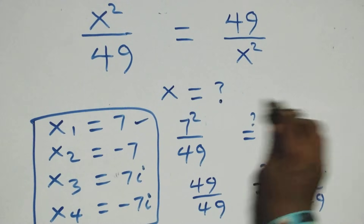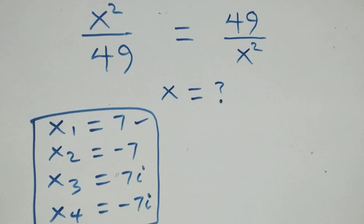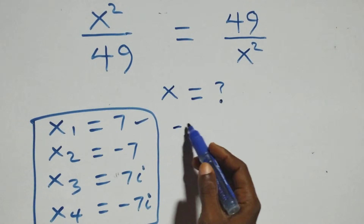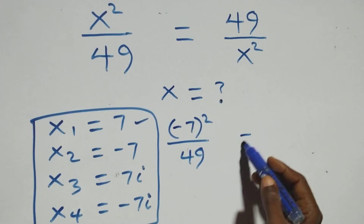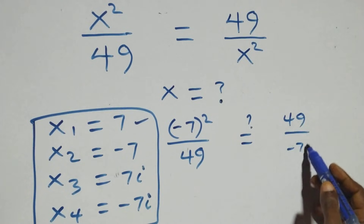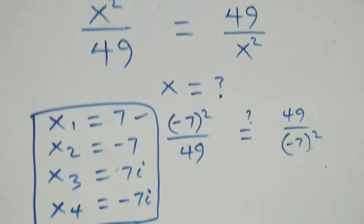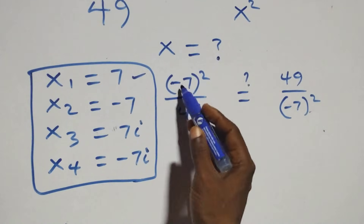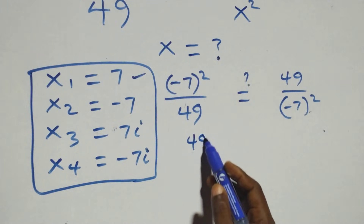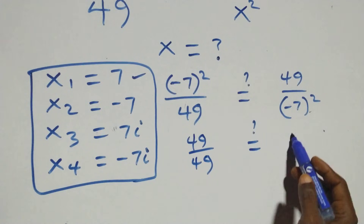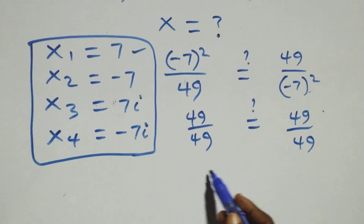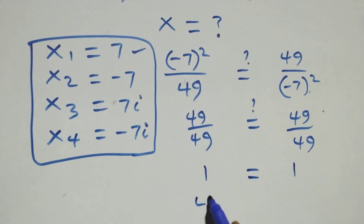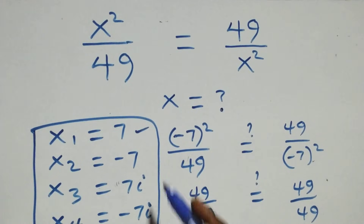Next, substituting x equals negative 7: we get (negative 7) squared over 49. The square makes negative 7 turn to positive, so that's 49 over 49, which equals 49 over 49 as well. That's 1 equals 1 — left-hand side equals right-hand side. So x equals negative 7 also satisfies the given equation.